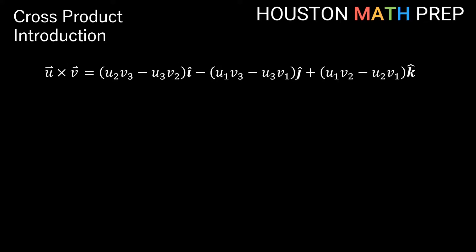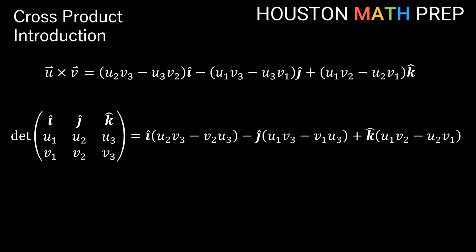Let's go back to calculating u × v. This expression is exactly what we get by calculating the determinant of a 3×3 matrix — with standard unit vectors î, ĵ, k̂ in the first row, and vectors u and v in the remaining rows in the same order as the cross product. For u × v, u goes in the second row and v in the third; for v × u, swap their order.